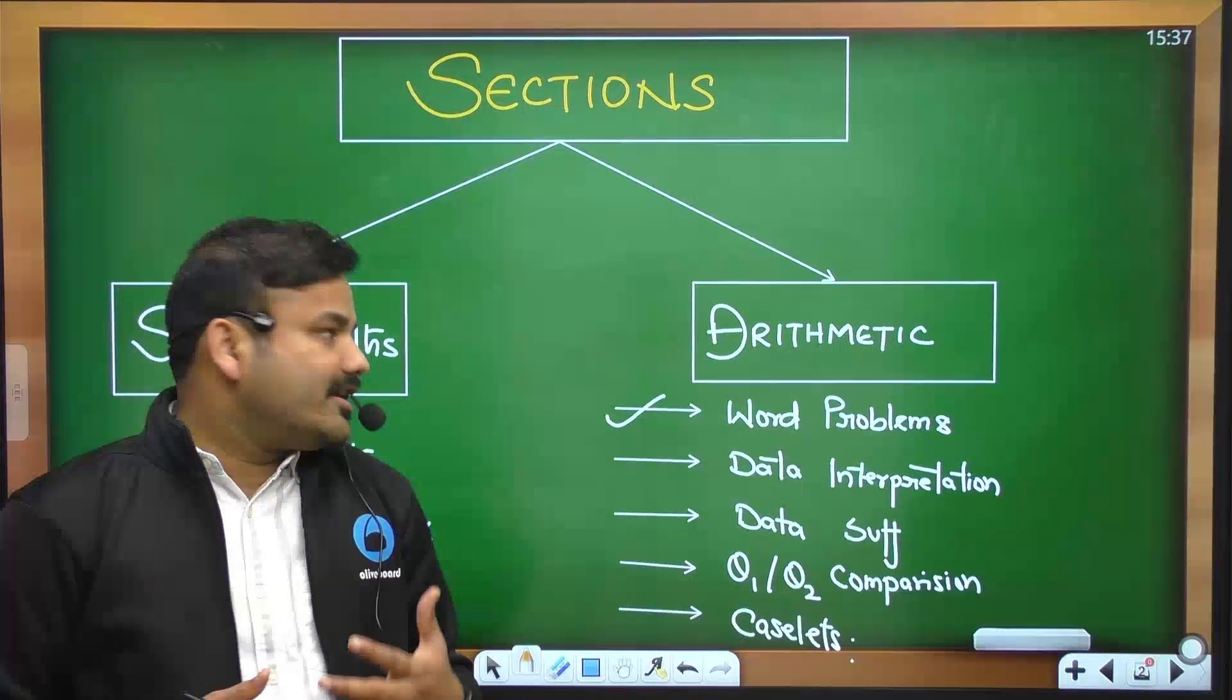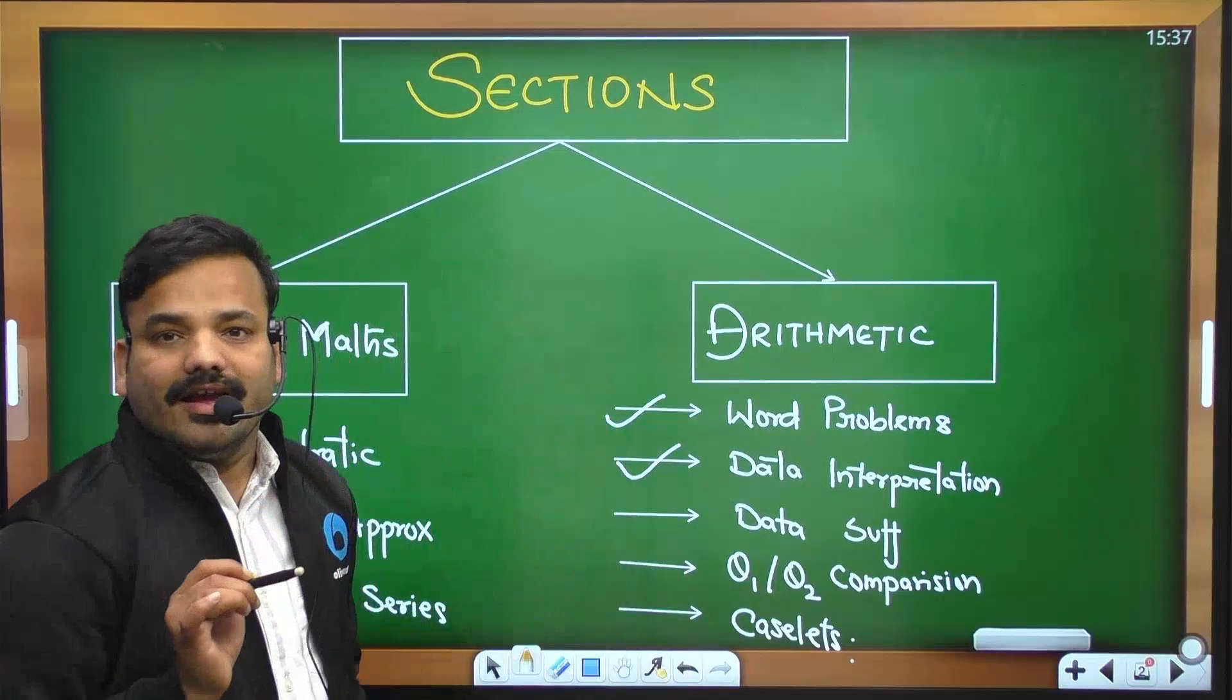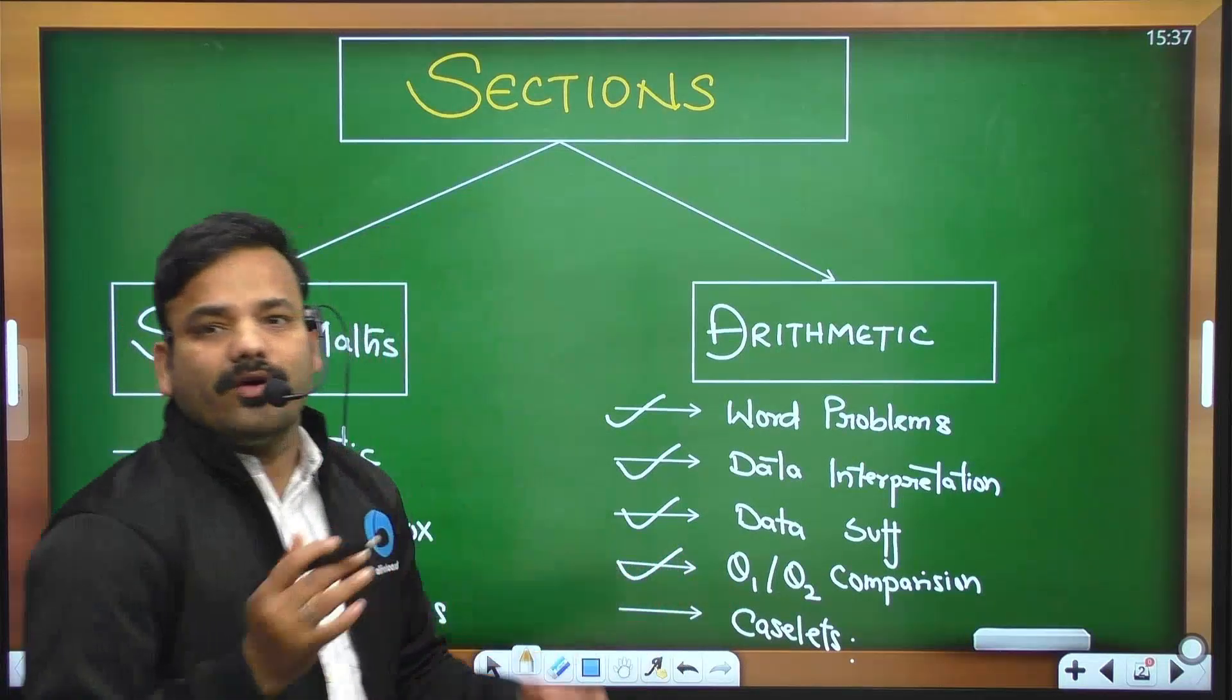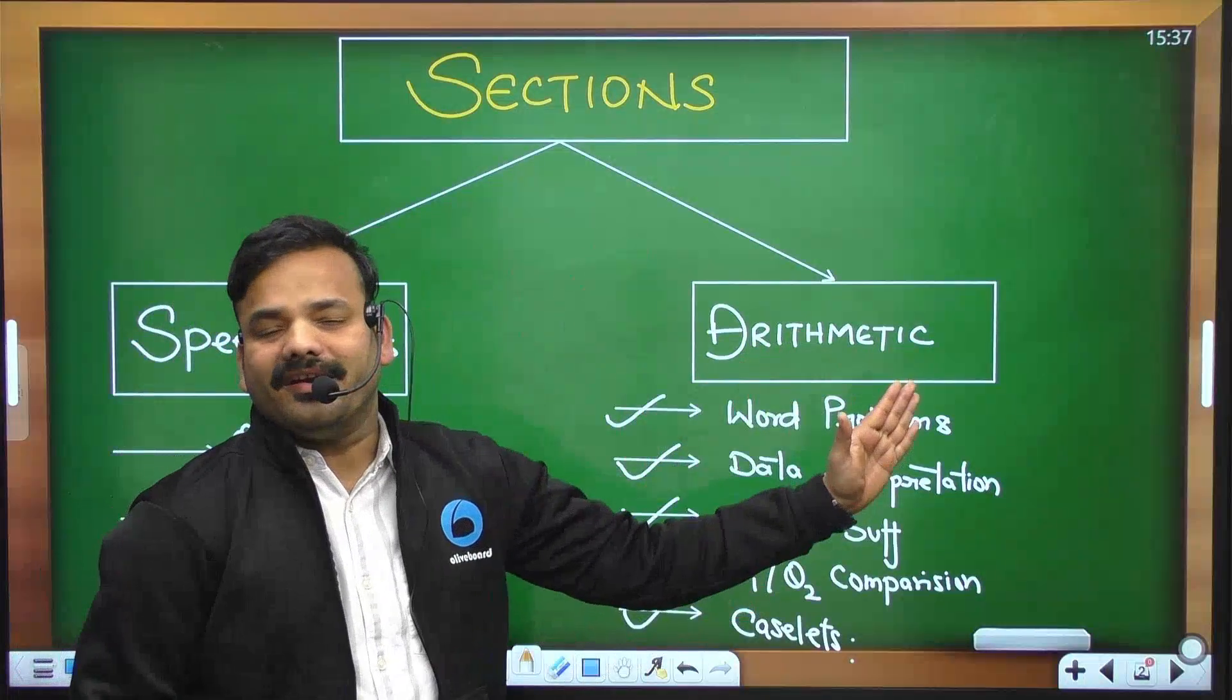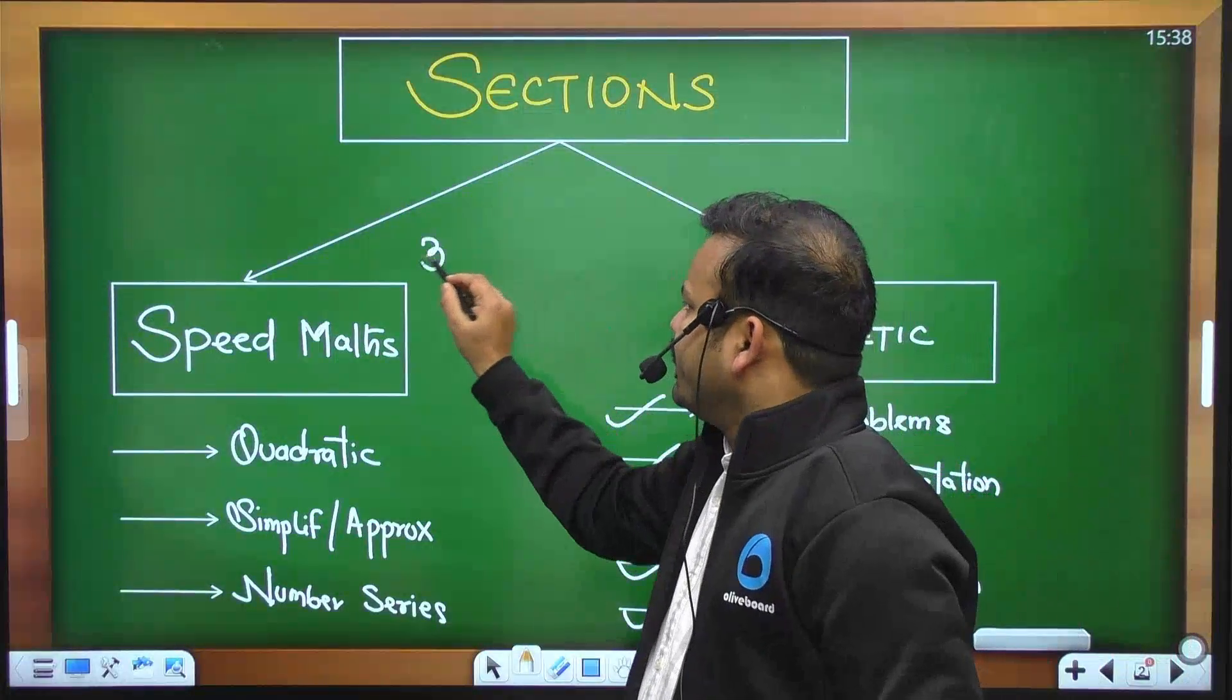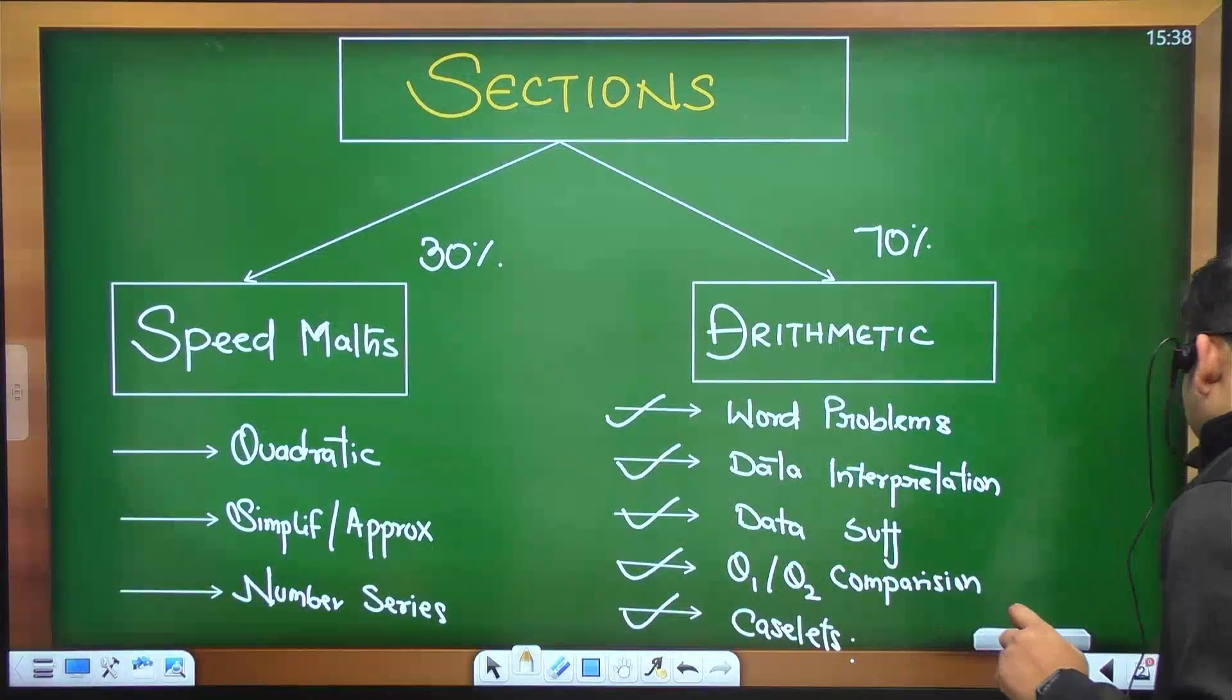Binomial system ho gaya, yeh saare pattern ho gaya, ratio and proportion. So this is word problems. Depending upon word problems, if you have arithmetic section strong then the DI part is strong. Arithmetic reflection is all the patterns - mains data sufficiency premium can be given, but generally the mains part is Q1-Q2 comparison, quantity comparison, caselets. So this is arithmetic dependent.